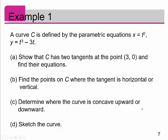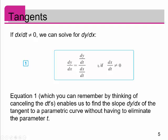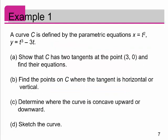I want to walk through both formulas — the first and second derivative — with one problem that covers a lot of topics. Curve C is defined by x equals t squared and y equals t cubed minus 3t. Here are the four things I want to do: A, show that C has two tangent points at the point (3, 0) and find their equations; B, find the points on C where the tangent is horizontal or vertical; C, determine where the curve is concave upward or downward; and D, sketch the curve. Parts A and B are applications of the first derivative, C uses the second derivative, then we sketch.